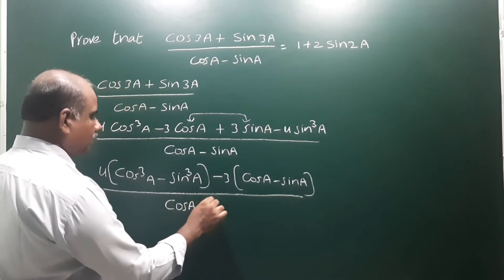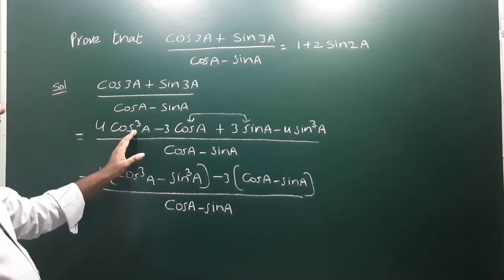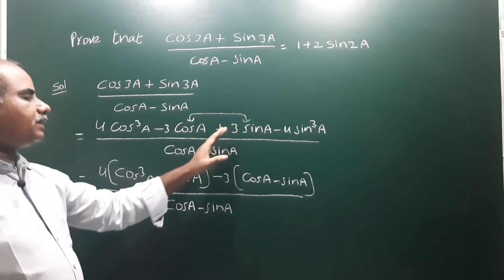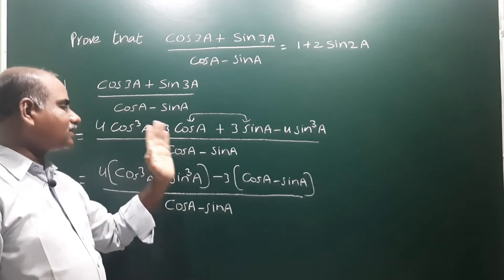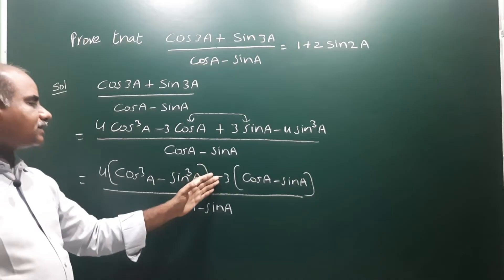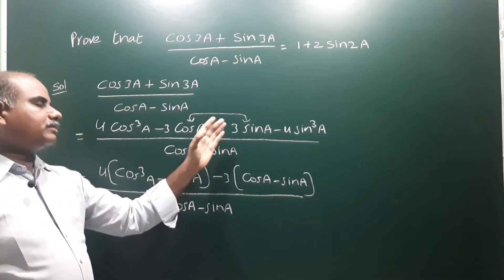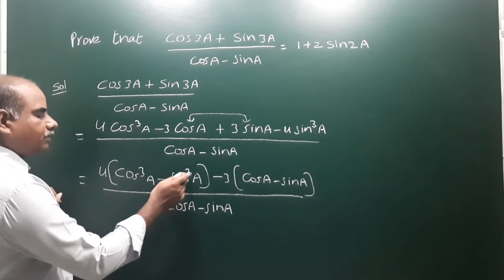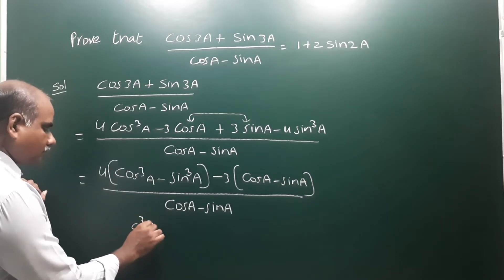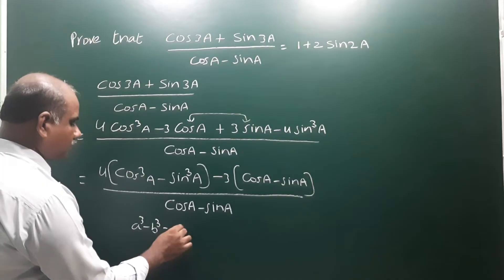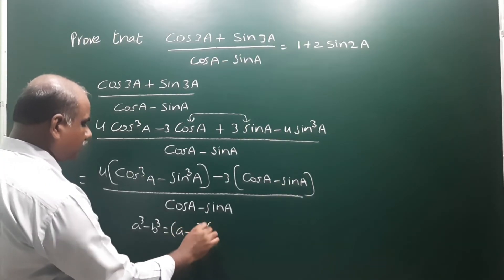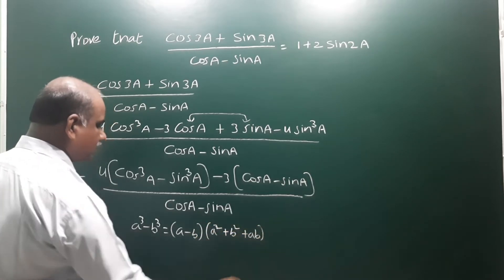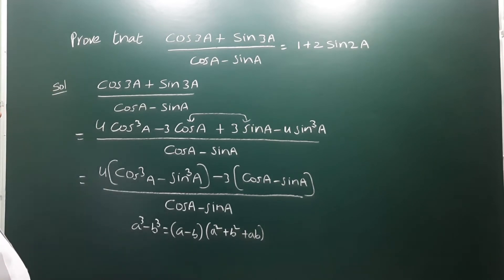So the numerator is 4(cos³a - sin³a) - 3(cosa - sina), all divided by (cosa - sina). Now we apply the a³ - b³ formula: a³ - b³ = (a - b)(a² + b² + ab).